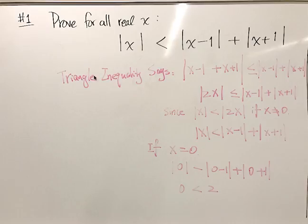So in this proof, we began by noticing that the right-hand side of this inequality is something that, because it's the sum of absolute values, the triangle inequality can tell us something about. And so we observed that according to the triangle inequality, the absolute value of the sum of x minus one and x plus one will be less than or equal to the sum of the absolute values.